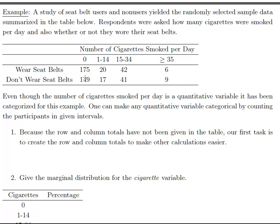The column total here would be 175 plus 149, so that's 324. Then 37, 83, and 15 — which is 6 plus 9. I'm going to do the same for the row totals: this row total is 243, and the next one is 216. I can do a row or column total for the total number of people in the survey — the row and column totals should add up to the same value if everything is calculated correctly.